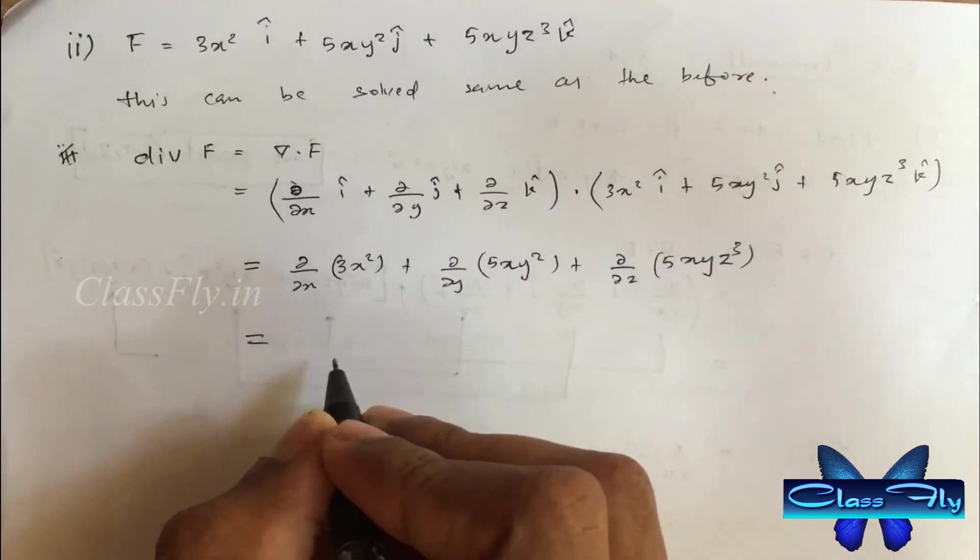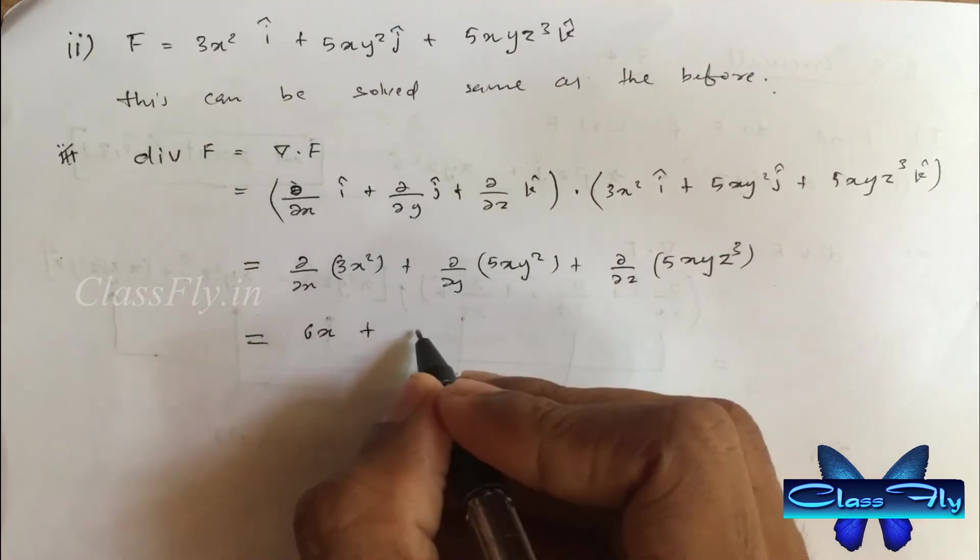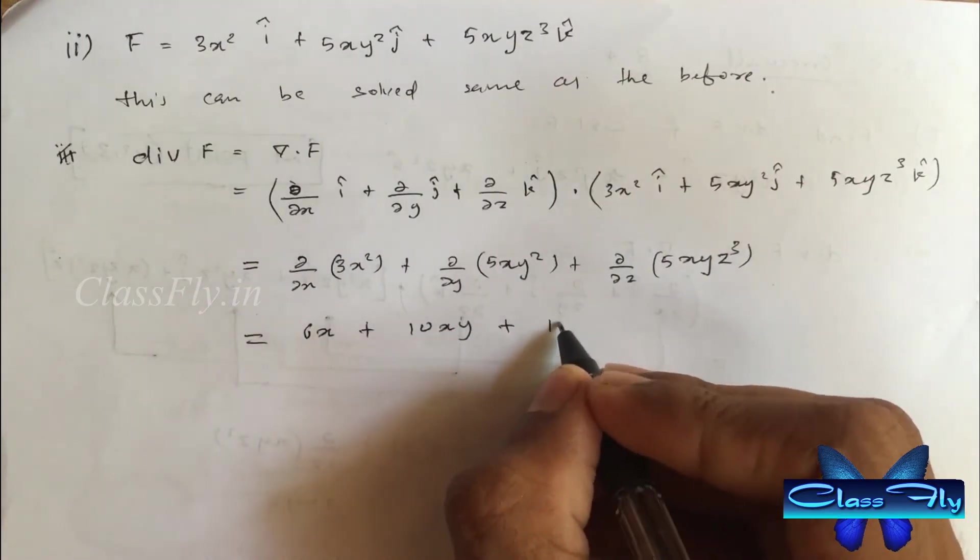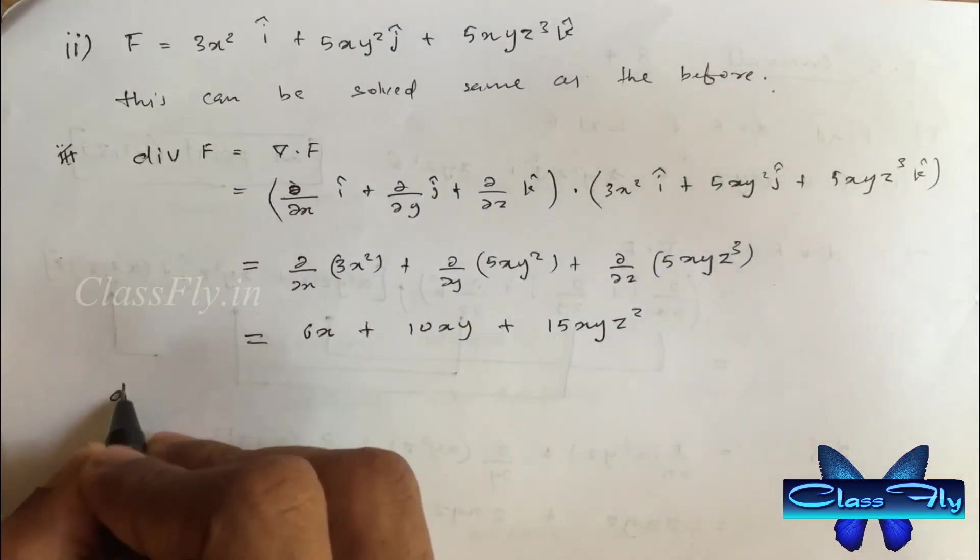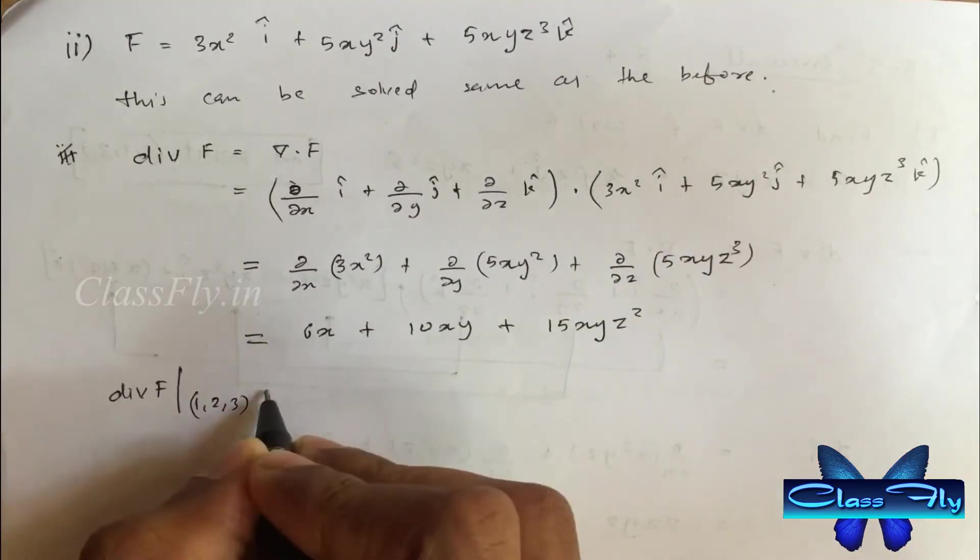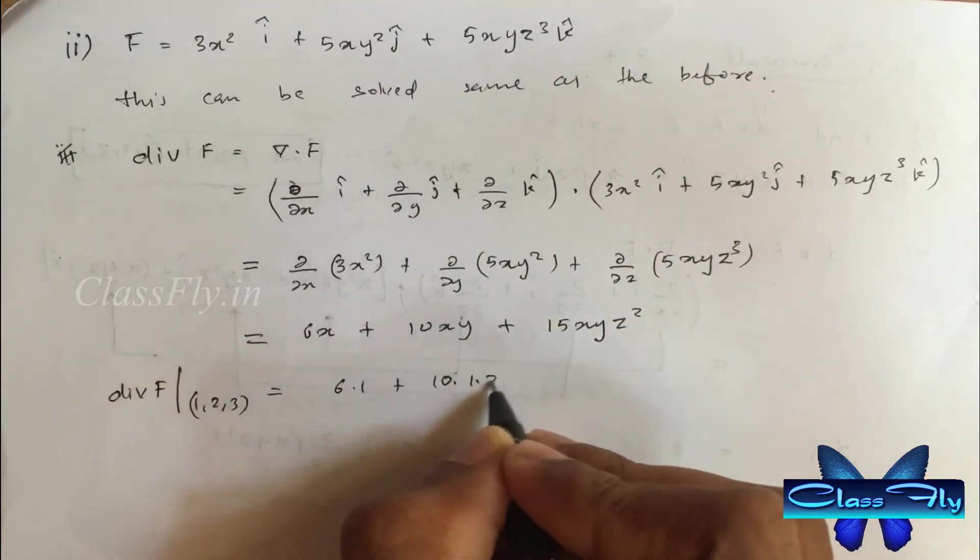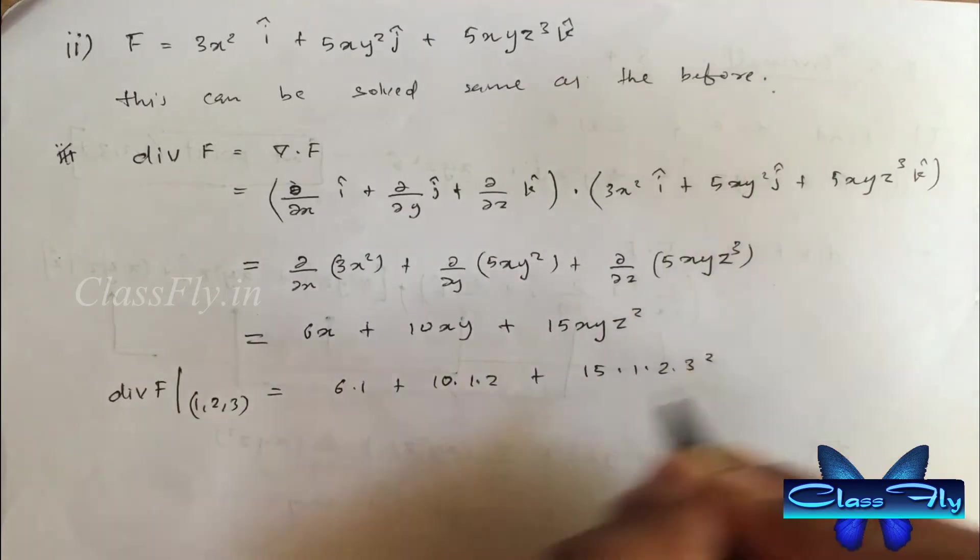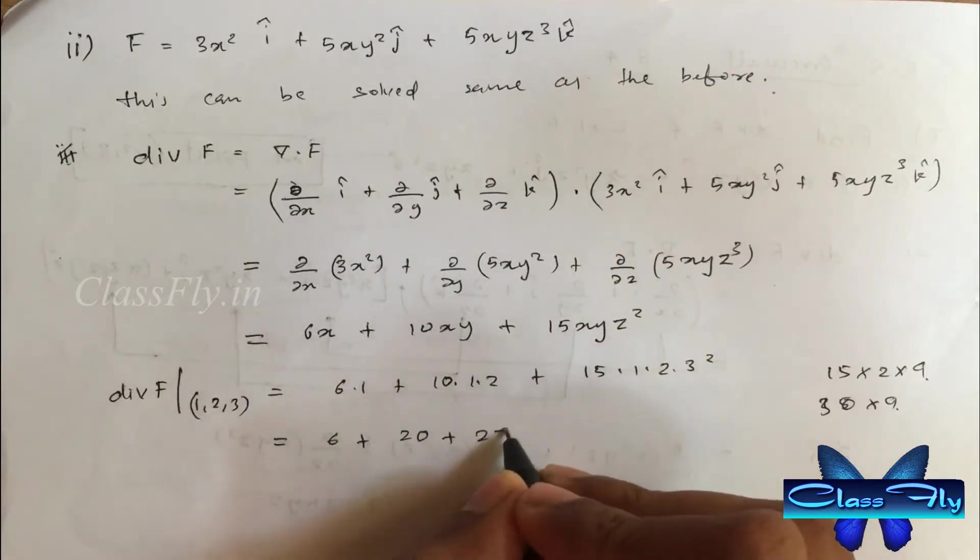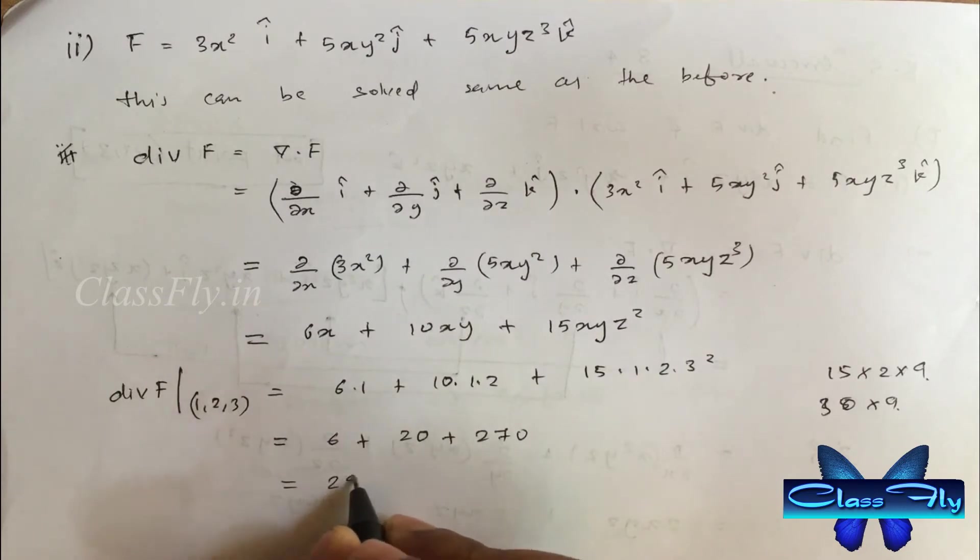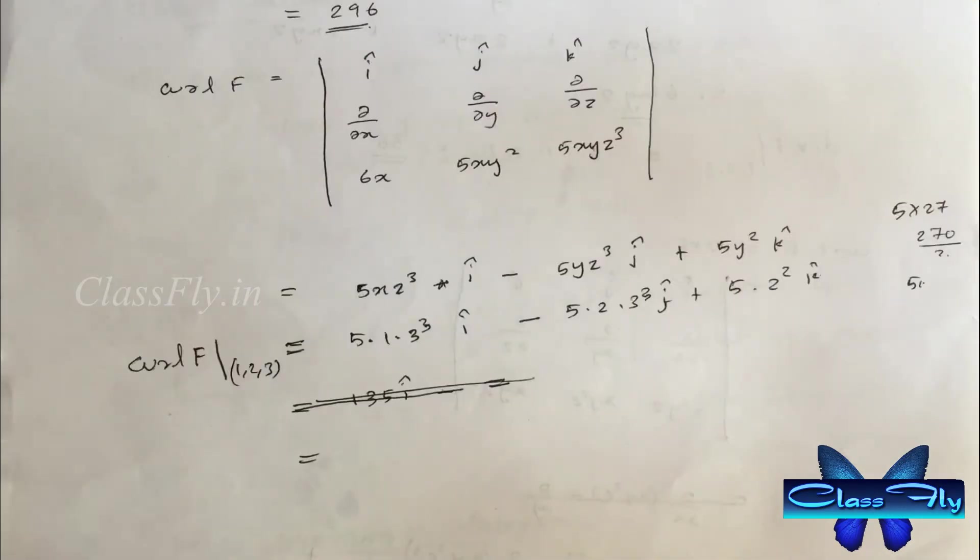After simplification we get this equation. Now we have to substitute the point (1, 2, 3) which gives divergence of F equals 296.